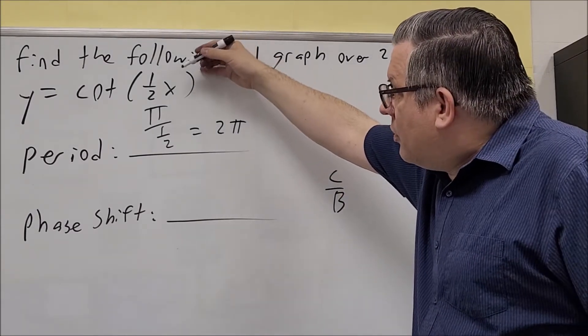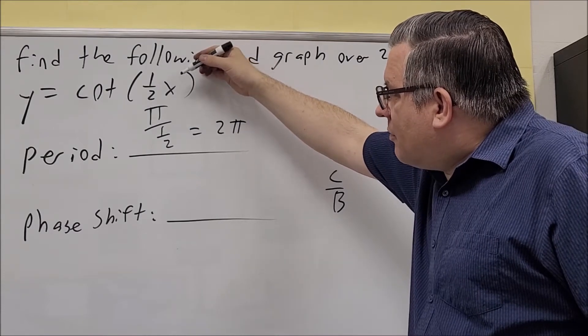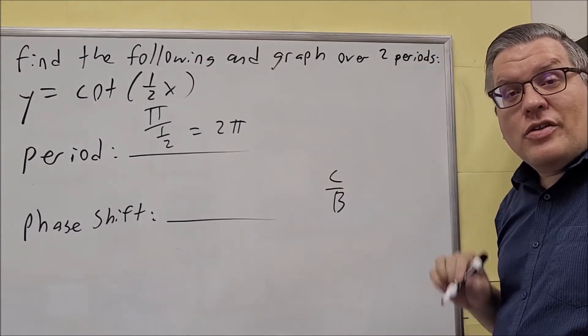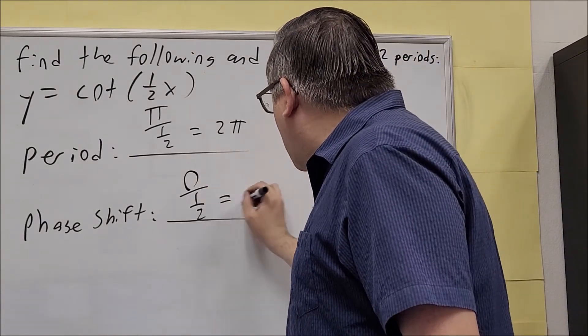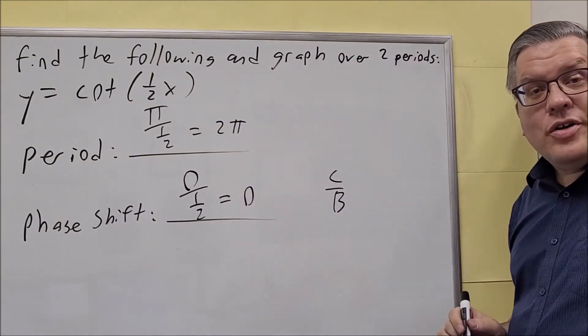Now in this case, we do not have a number that comes after the x. So because there's no number there, that means your c value is going to be 0. So we have 0 over ½, which gives you 0 for your phase shift.